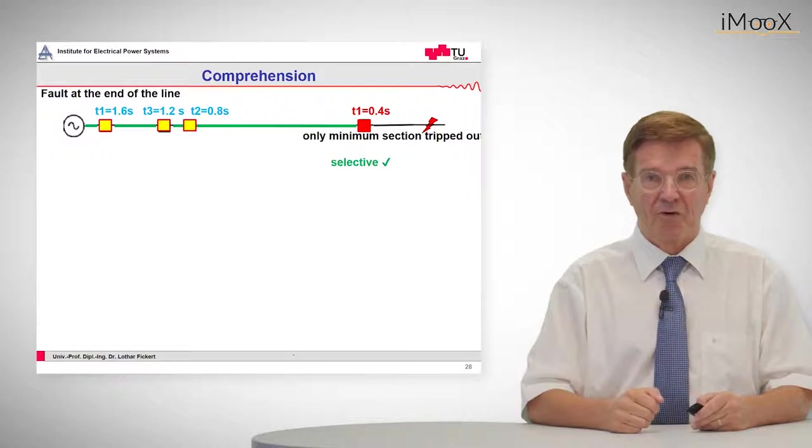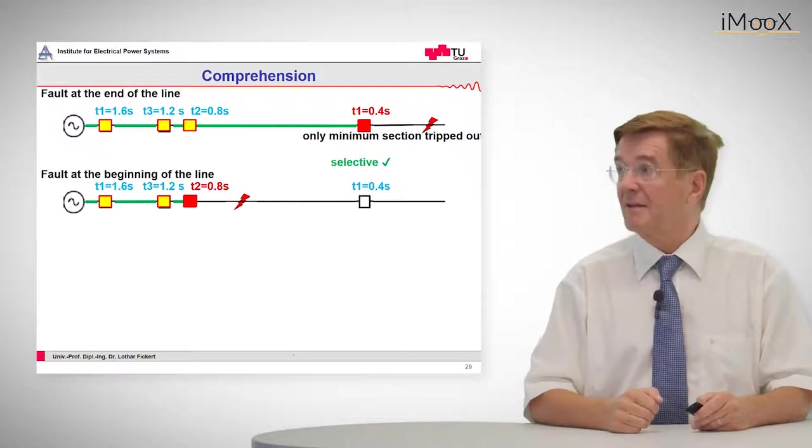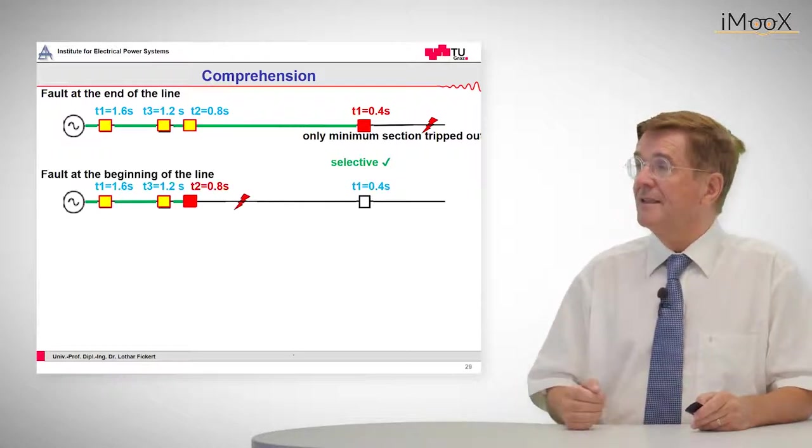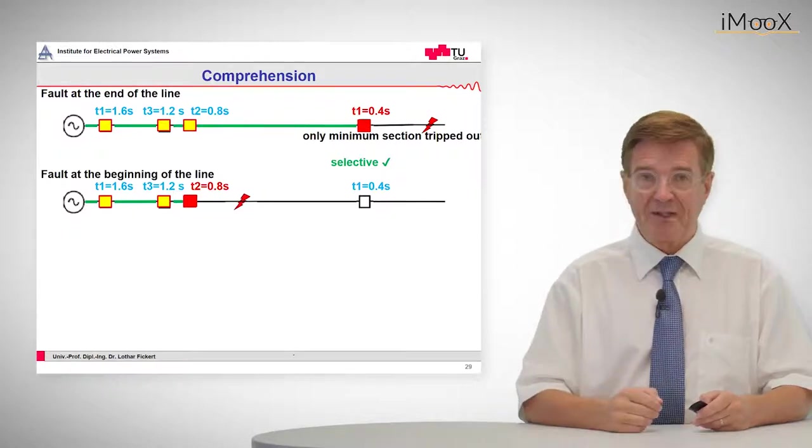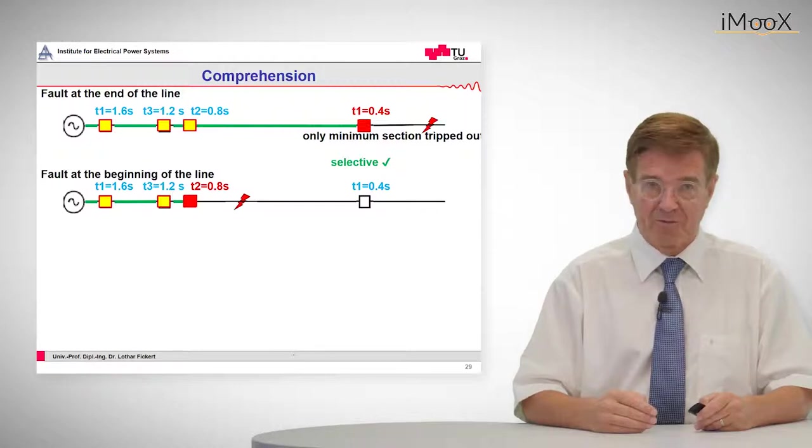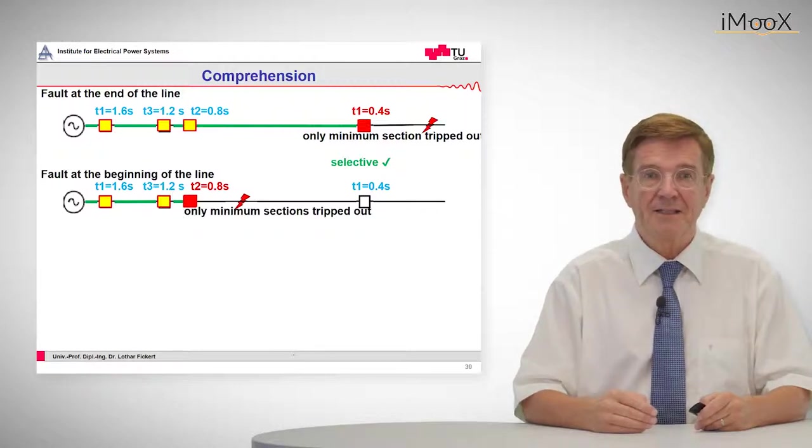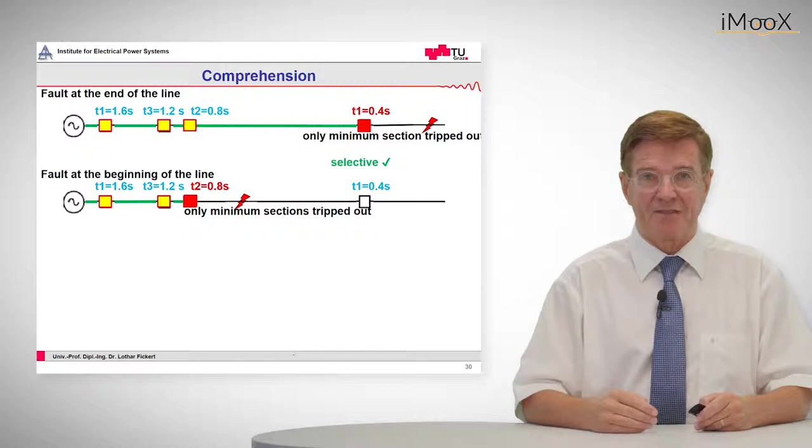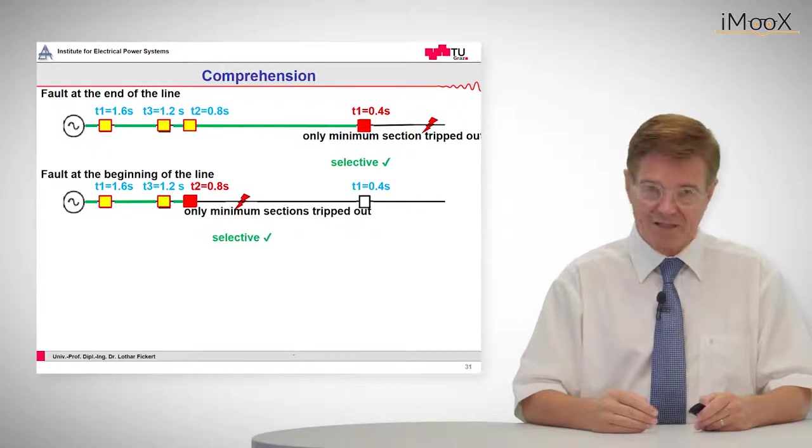If we have a fault on the beginning of the line, we see the whole feeder is tripped out. That is necessary because all other relays would not be appropriate. And here again we have only minimum sections tripped out and this is selective by the way.